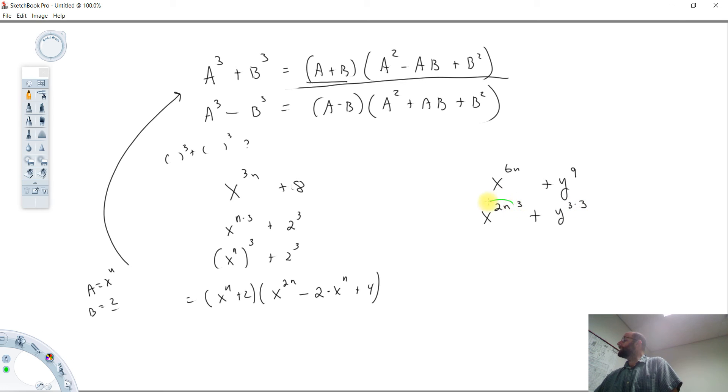And now we just recognize what we're looking at. This is x to the 2n cubed, and y cubed cubed.